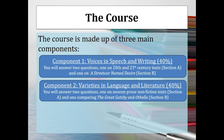Component two is also worth 40% and is called Varieties in Language and Literature. We look particularly at the section called Society and the Individual, broken down into two sections. Section A gives you an unseen non-fiction text that you've never seen before and asks you a question about it. Section B is where you compare two pre-studied texts — The Great Gatsby and Othello — based on a particular question.